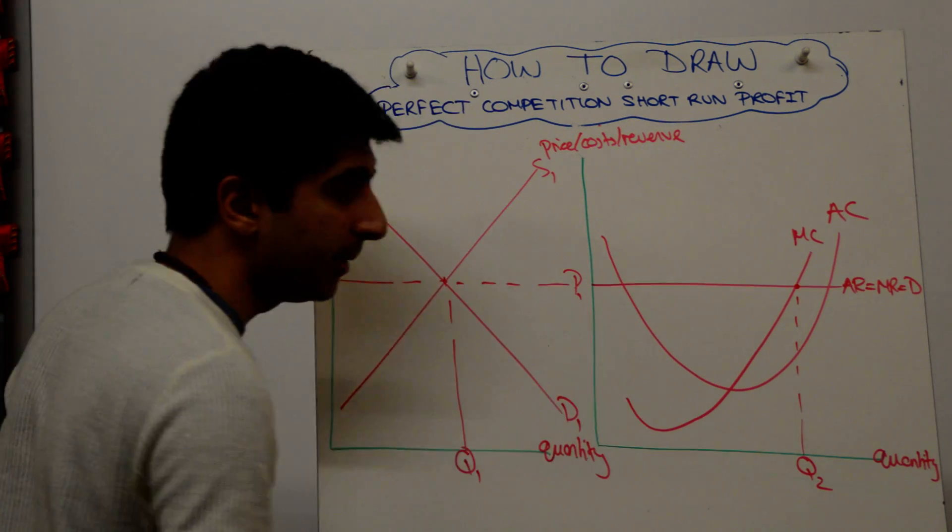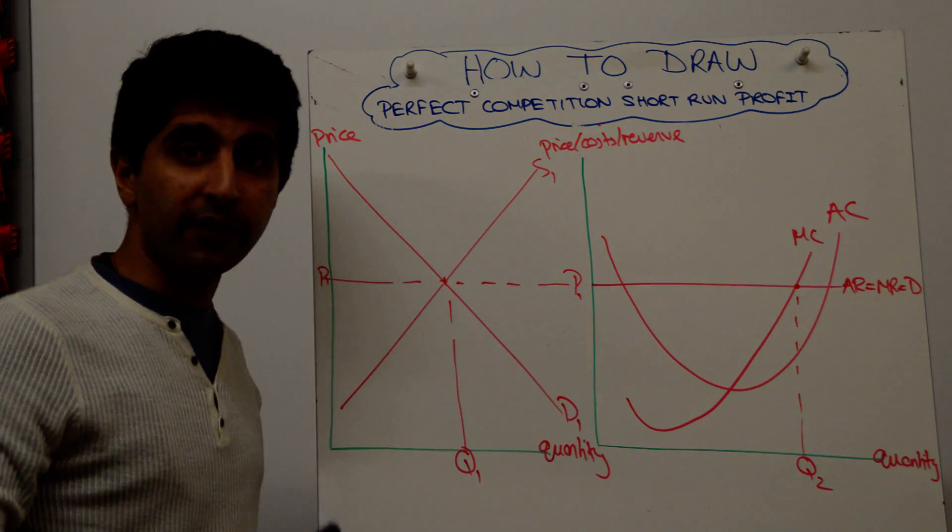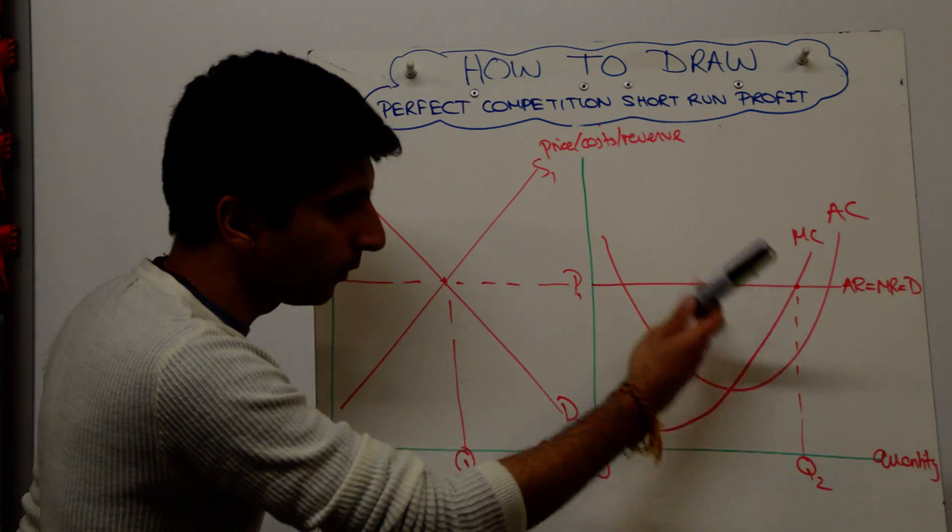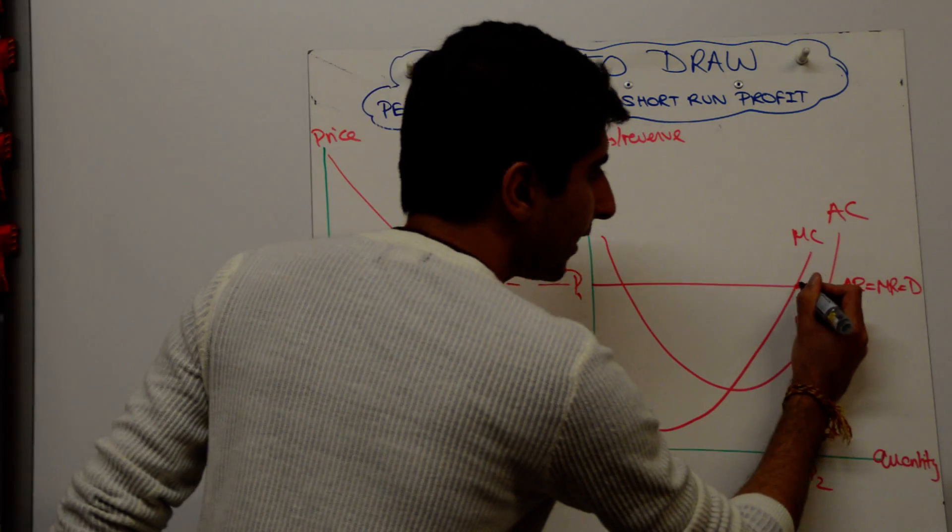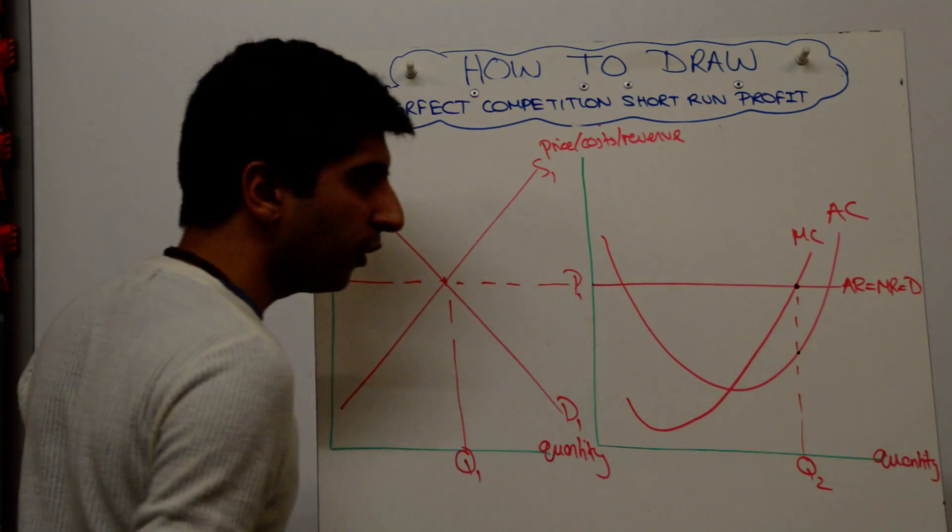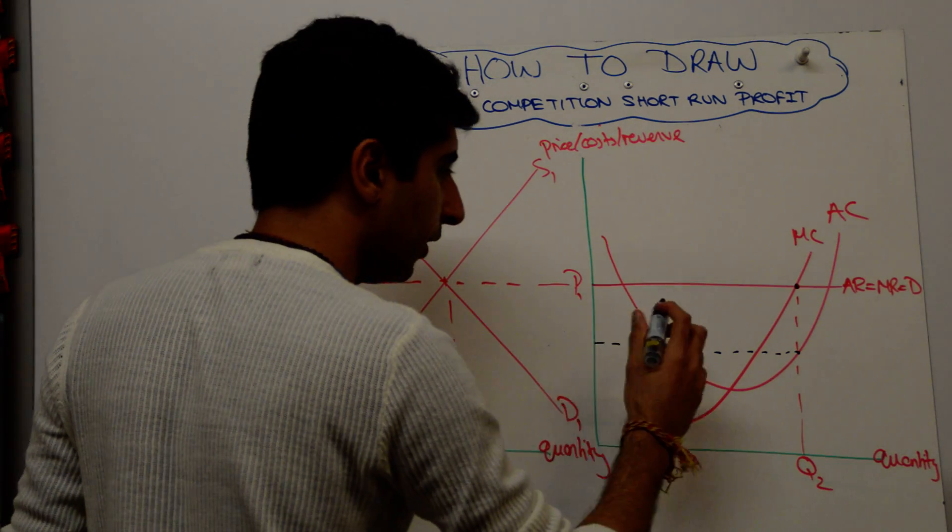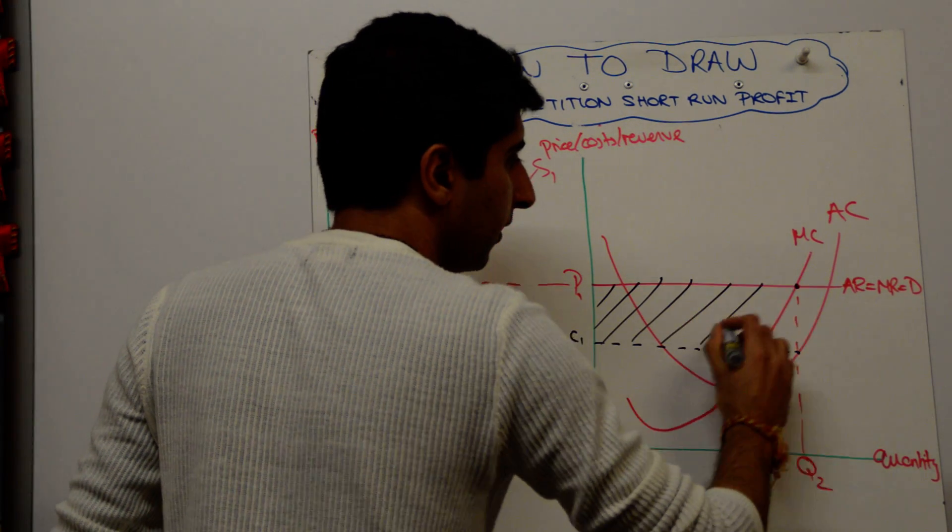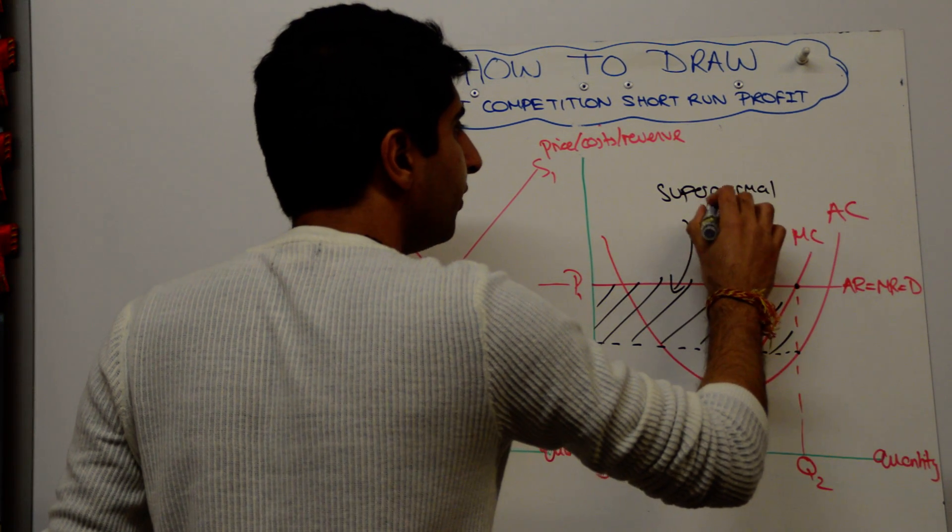Next, we want to work out the level of profit being made. We know there are supernormal profits. The way we've drawn the diagram ensures that there will always be supernormal profit because AC is drawn below AR. So we know that there are going to be supernormal profits. So the black dot first, that's the level of average revenue. At quantity Q2, there's the level of average cost. If you want to take that point across, take it across. If you want to call it C1, you can call it C1, that's fine. If you want to shade it in, you can shade it in. So that is the level of supernormal profit in the short run.